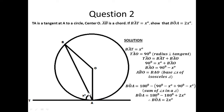So, if this is 90 minus X, we know that BO is a radius and OA is also a radius. That means this triangle here is an isosceles triangle, and the base angles of an isosceles triangle are equal. That means this angle here is equal to this angle here. So if this is 90 minus X degrees, that means this angle is also 90 minus X degrees.